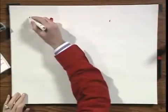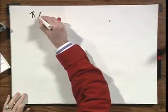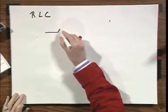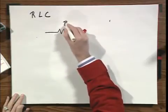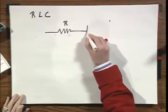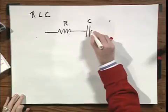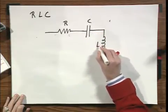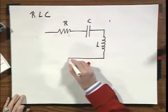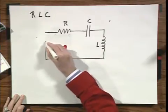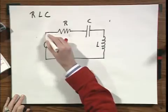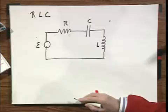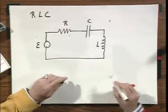First, let's review RLC circuits — RLC circuits in series. I have here a resistor, I have here a capacitor, and here a self-inductor, L. And here I have some kind of a voltage source. I call it E. And it could have various different natures, as we will see very shortly.